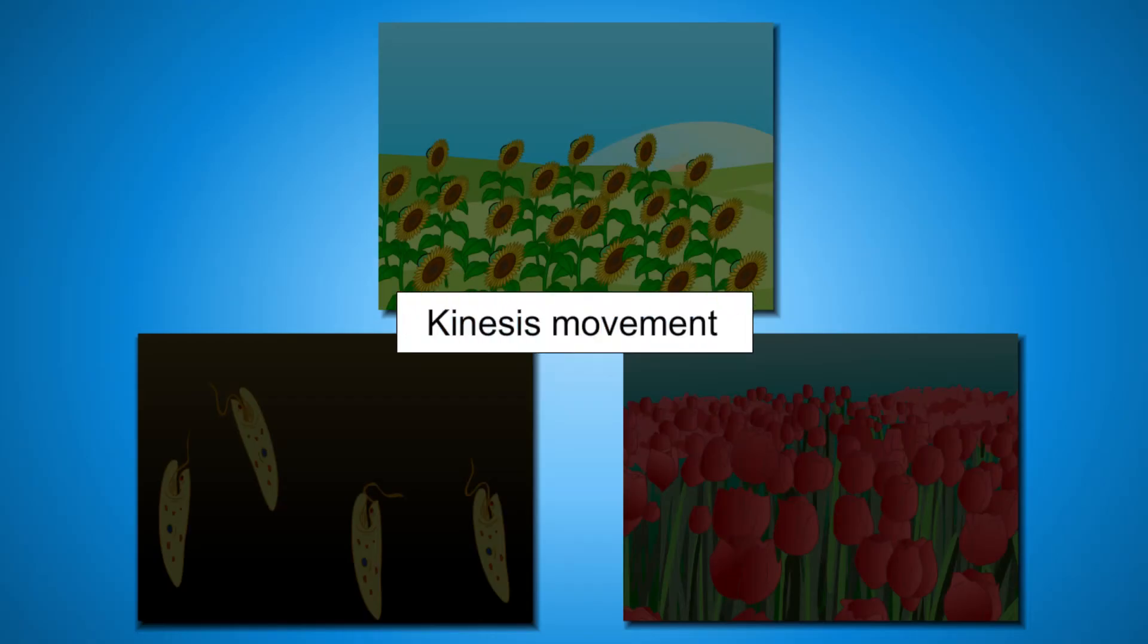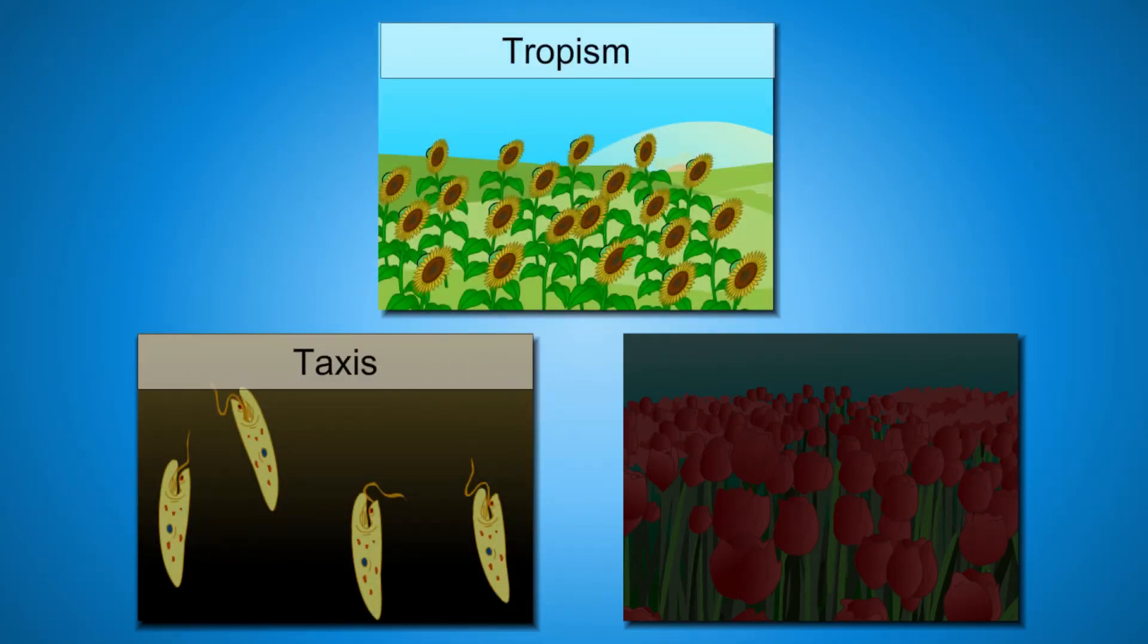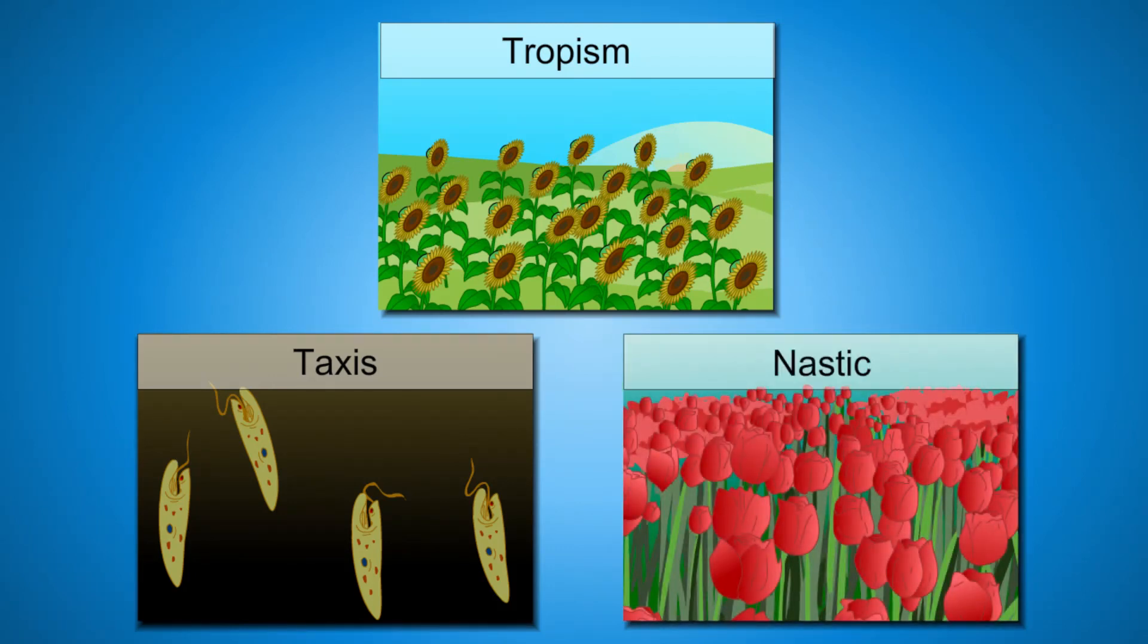Thereby, kinesis motion can be categorized into three types, that is, tropism and taxis which are affected by the direction of stimulus and nastic which is not affected by the direction of stimulus.